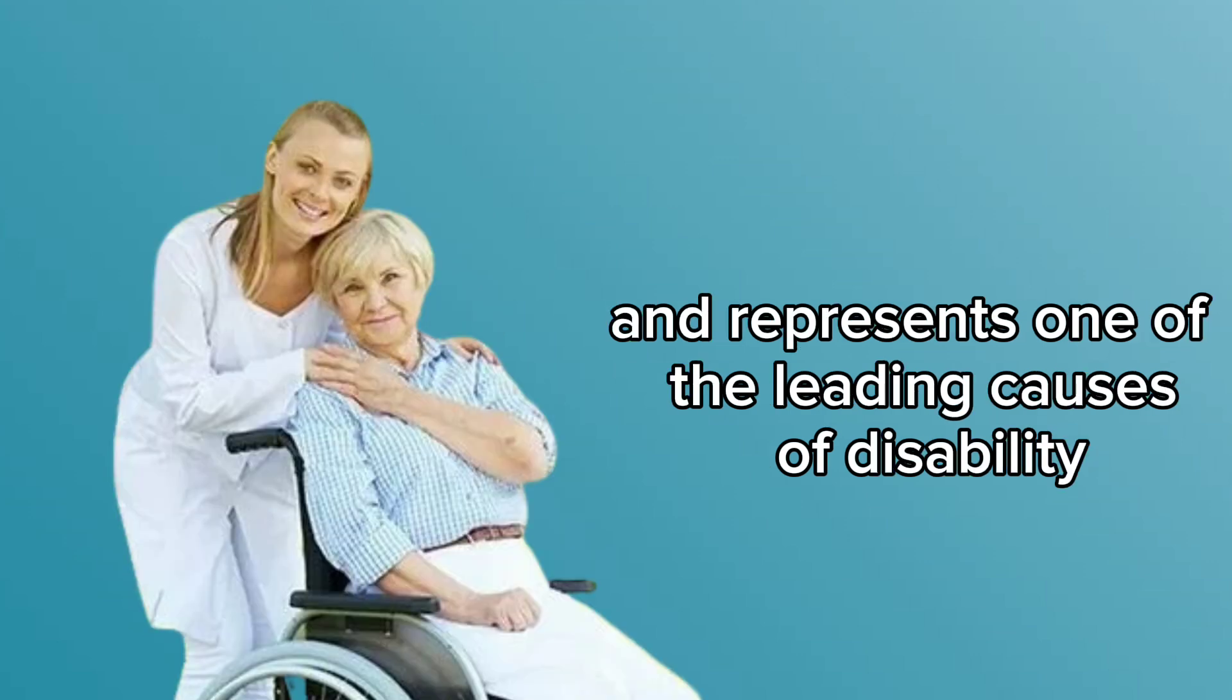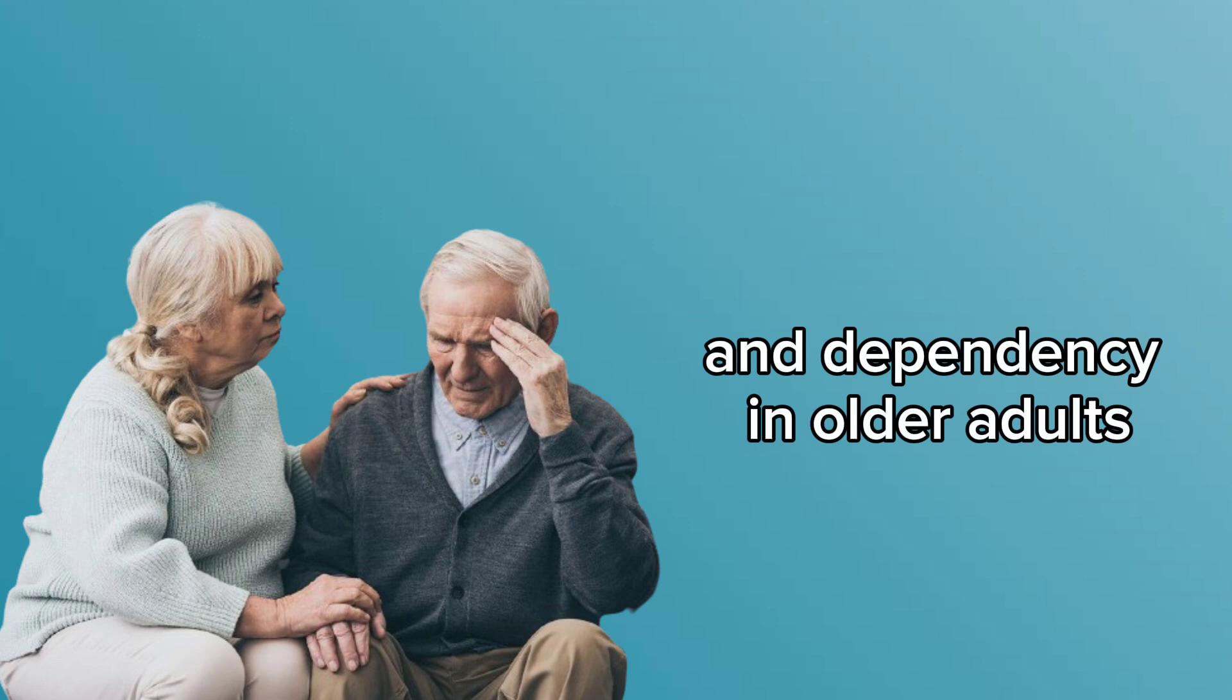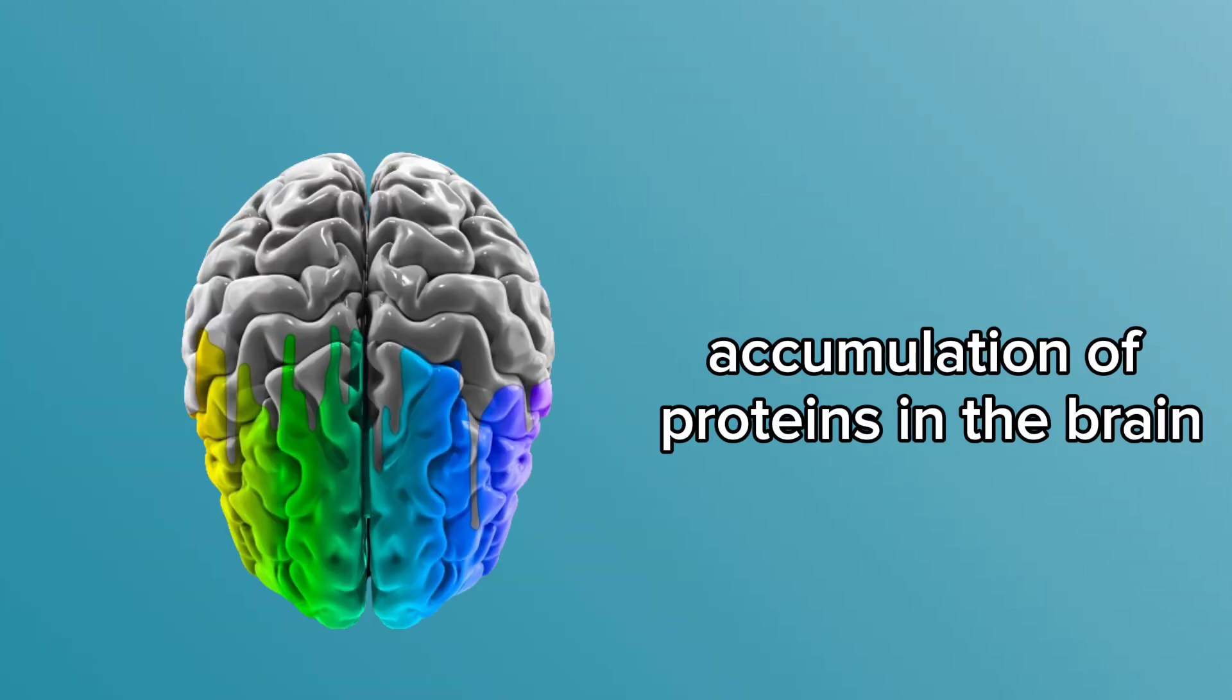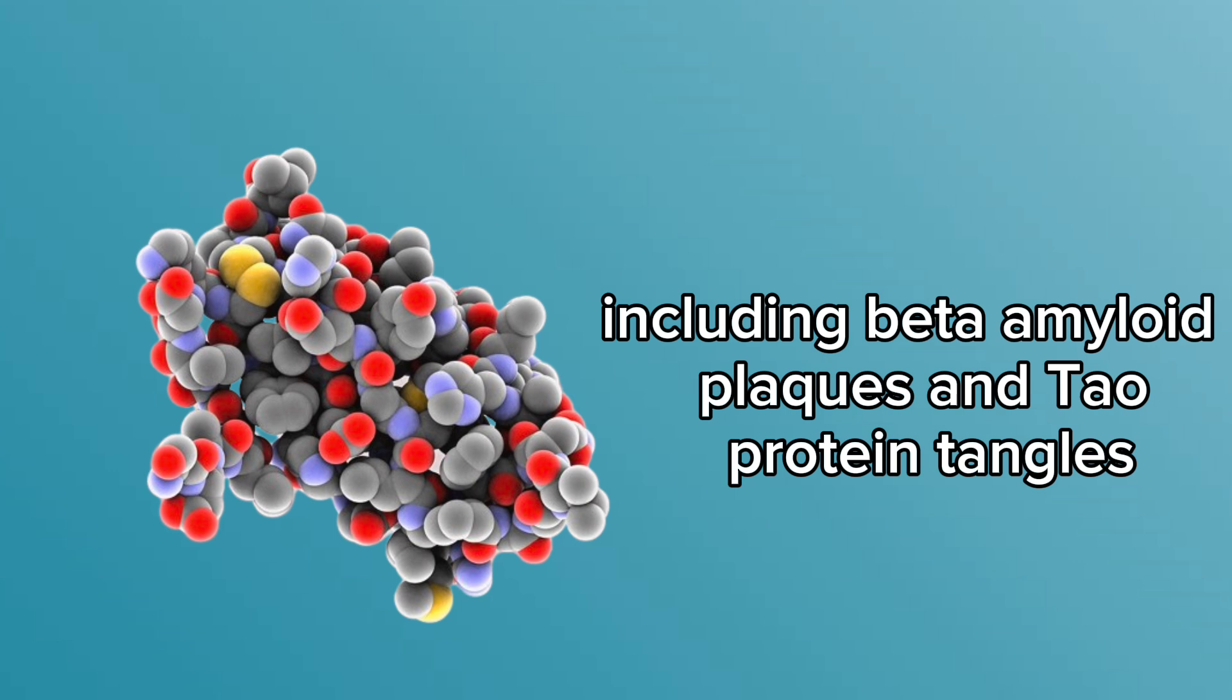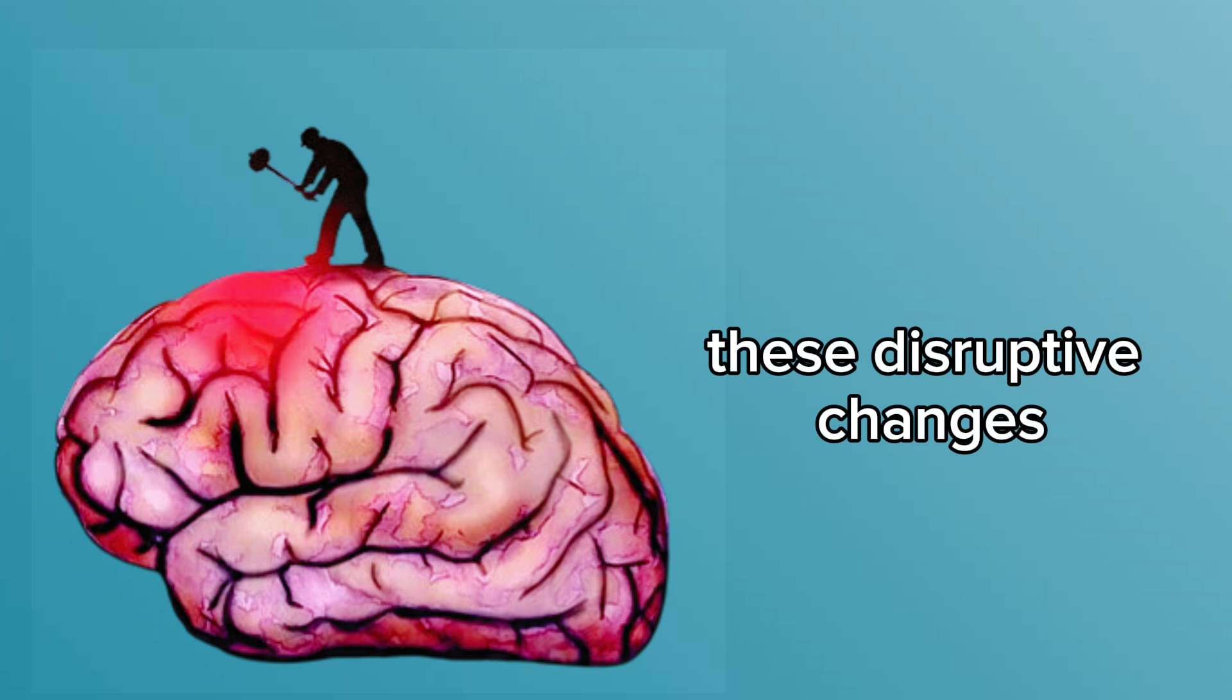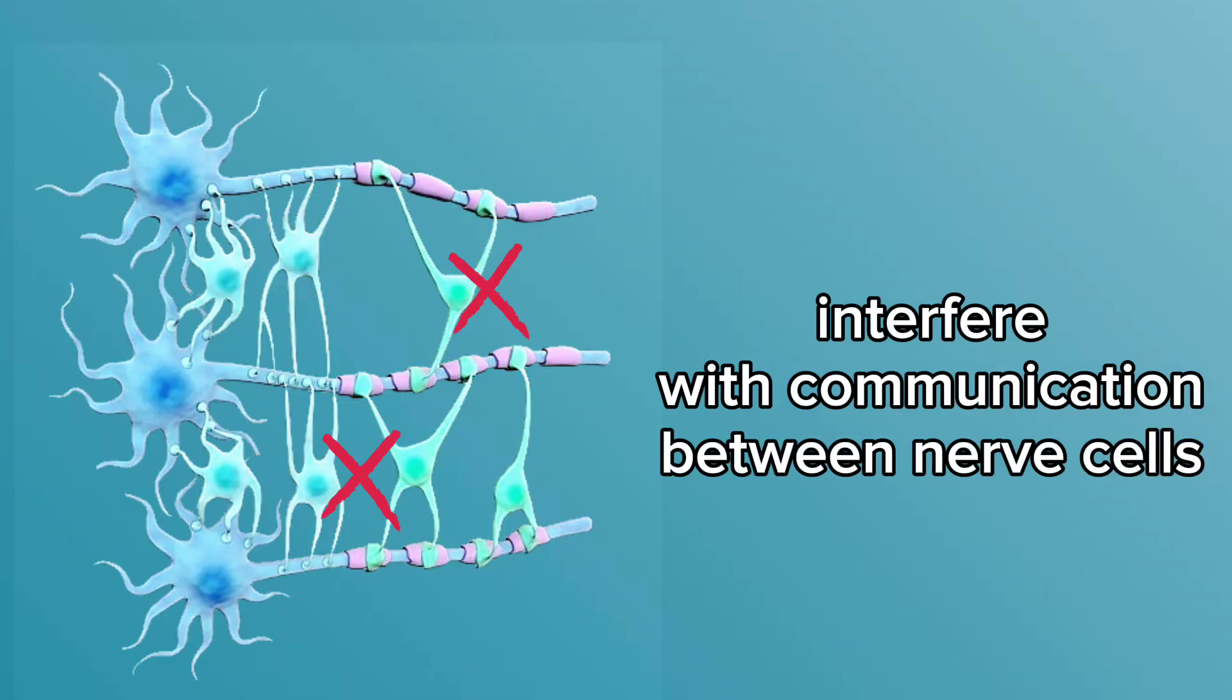Alzheimer's disease is characterized by the abnormal accumulation of proteins in the brain, including beta-amyloid plaques and tau protein tangles. These disruptive changes interfere with communication between nerve cells and trigger a cascade of events resulting in neuronal damage, cell death, and brain atrophy.